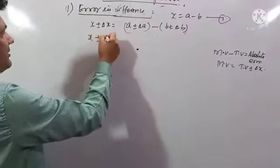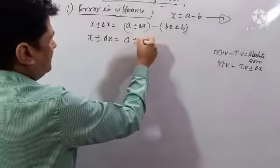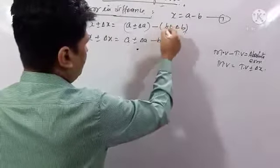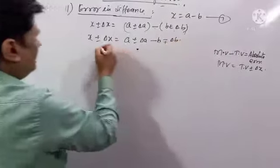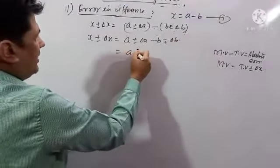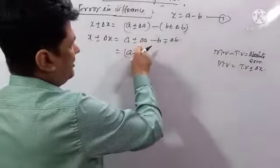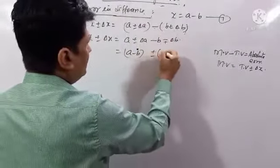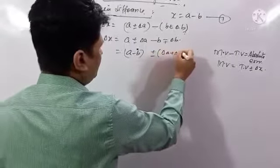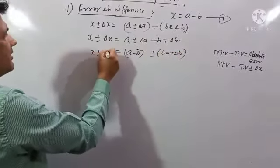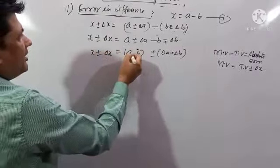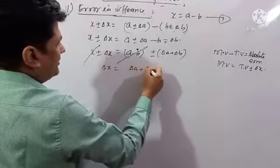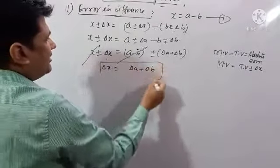So x plus or minus delta x equals (a plus or minus delta a) minus (b plus or minus delta b). Expanding: minus into plus is minus, minus into minus is plus delta b. The absolute error is plus or minus (delta a plus delta b). Whether sum or difference, in both cases the absolute error is the sum of the individual absolute errors.